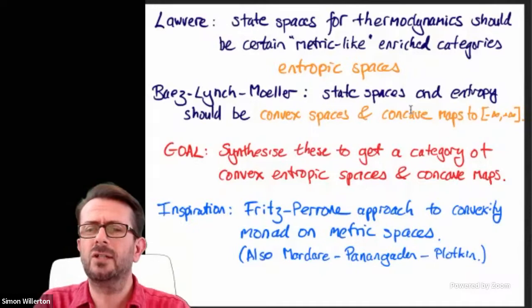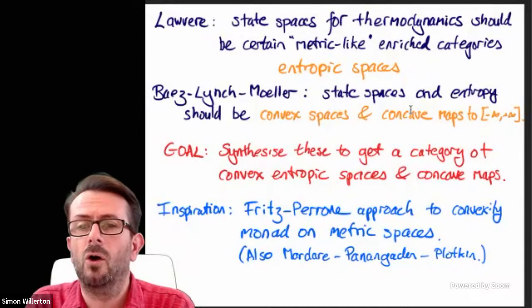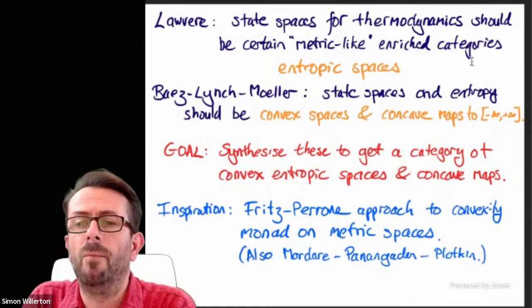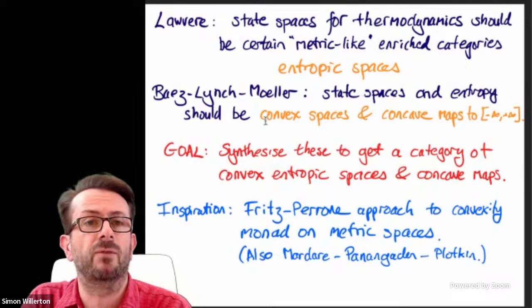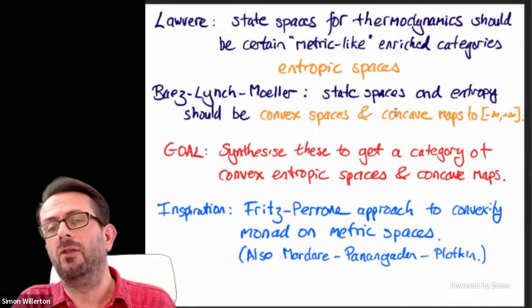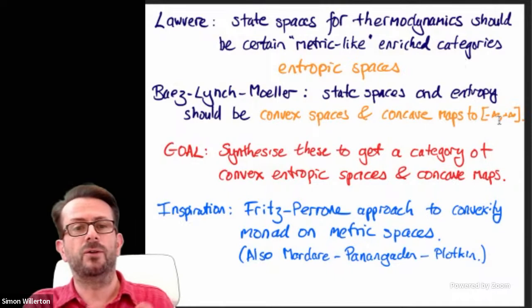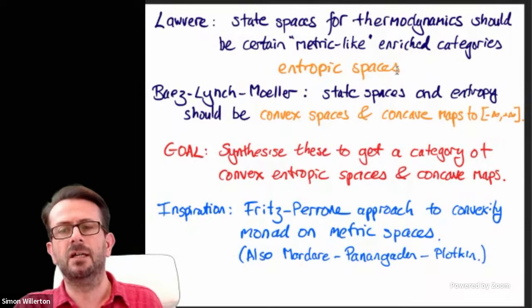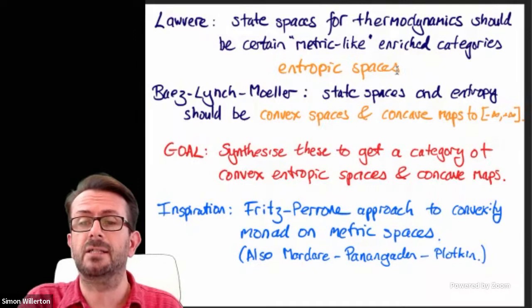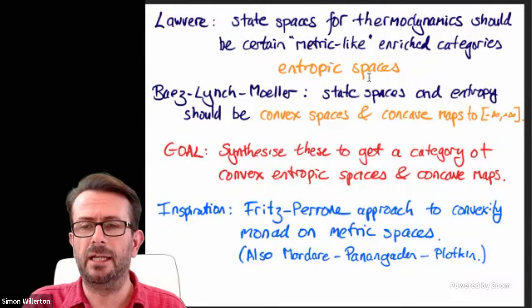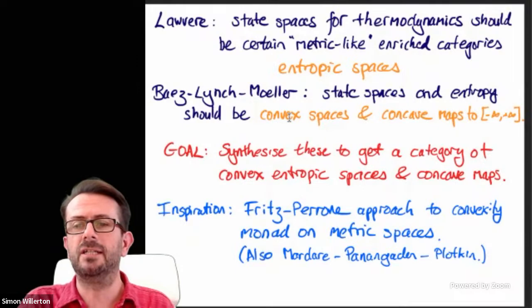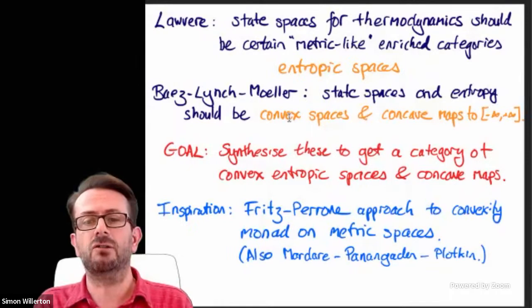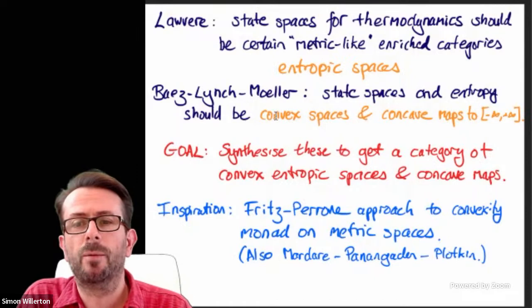About 18 months ago, Baez, Lynch, and Muller wrote a paper on thermodynamics with a category-theoretic approach, where they say that state spaces and the notion of entropy should be, respectively, convex spaces, and entropy should be a concave map to the extended real numbers. This stood out to me — particularly the minus infinity to plus infinity, which is very much related to Lavier's perspective. On the face of it there's no obvious connection, but it looked to me like there definitely should be one.